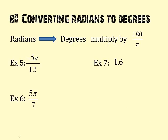What if it's switched? What if we have to convert from radians to degrees? Well, if this is the case, I multiply it by the reciprocal, which is 180 over π. So on example 5, negative 5π over 12, if I multiply it by 180 over π, guess what happens? The π is canceled.